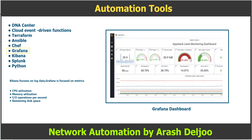Grafana does not store or collect data. It receives data from other sources where these types of metrics are stored — typically time series databases, for example InfluxDB. However, it can also integrate with other database types such as PostgreSQL and cloud monitoring systems such as AWS CloudWatch. In order for the data to be populated in these databases, you must use other tools such as SNMP.